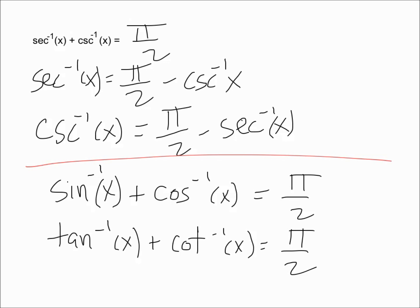This can be useful when you have many different inverse functions in a problem. If you have the inverse sine and the inverse cosine and you just want to simplify, or you have four different inverse functions, you can convert them using pi over 2 to make the problem simpler. That's all there is to say about inverse trig identities. Thank you for watching — I hope you found it useful, and please give it a like and subscribe for more videos.